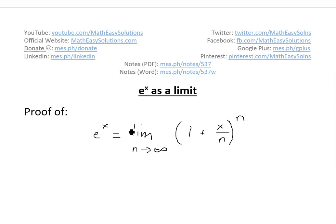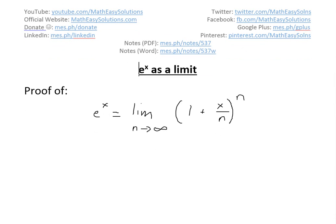It's time for another Math Easy Solution. This video discusses the exponential function e to the power of x and shows how it can be written as a limit. Specifically, we prove that e to the x equals the limit as n approaches infinity of 1 plus x divided by n, all to the power of n.